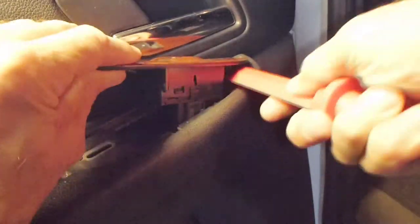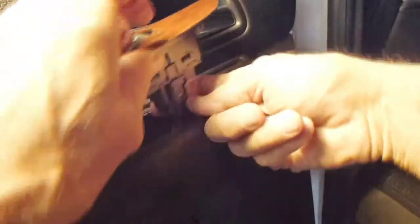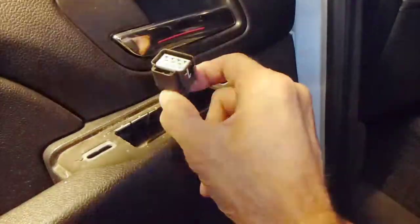There's two push tabs holding it in place. Just try to get your pry bar close to the base of the clip. That way you're not going to damage anything. Once you get it out, go ahead and push a little thumb release, and the switch will come right off the plug.